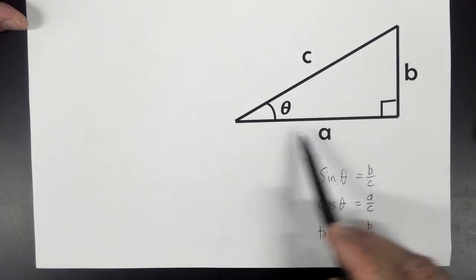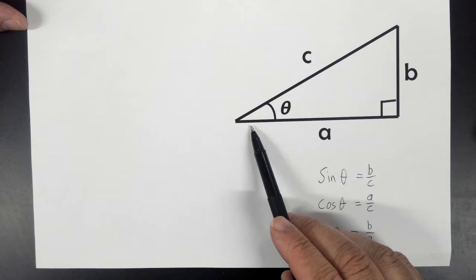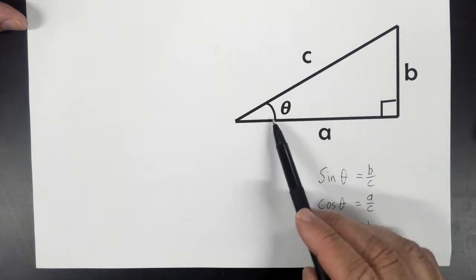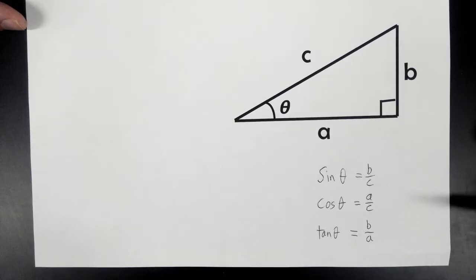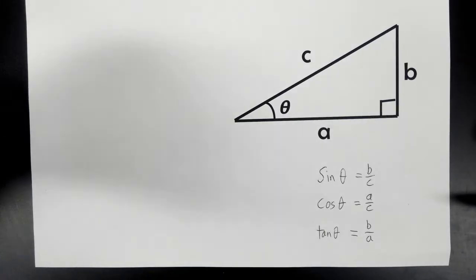A represents the adjacent side. The adjacent side is the side that helps make up this angle, but it's not the hypotenuse. So A, B, and C stand for the length of those sides.